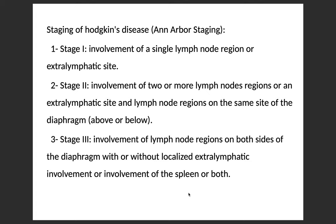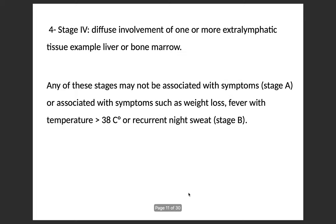Staging of Hodgkin's disease uses the Ann Arbor staging system. Stage 1: involvement of a single lymph node group or region or extralymphatic site. Stage 2: involvement of two or more lymph node regions or an extralymphatic site and lymph node regions on the same side of the diaphragm. Stage 3: involvement of lymph node regions on both sides of the diaphragm, with or without localized extralymphatic involvement, or involvement of the spleen, or both. Stage 4: diffuse involvement of one or more extralymphatic tissues, for example liver or bone marrow.